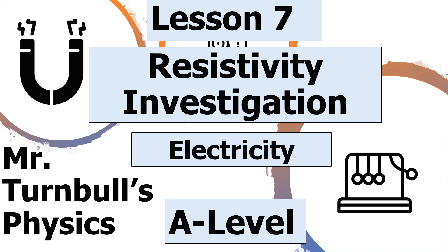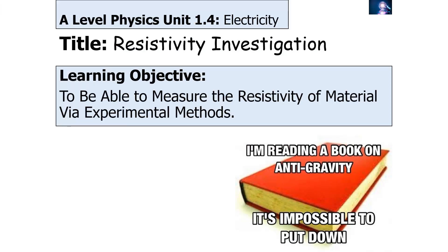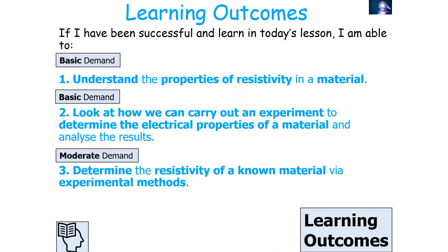Hello and welcome to this lesson on the resistivity investigation for the electricity topic for AQA A-level physics. In today's lesson we're going to look at how you can measure the resistivity of a material via experimental methods. If you've been successful you should be able to understand the property of resistivity in a material, carry out an experiment to determine the electrical properties of a material, analyze the results, and determine the resistivity of a known material via experimental methods.